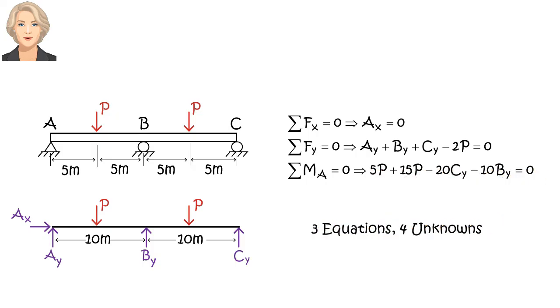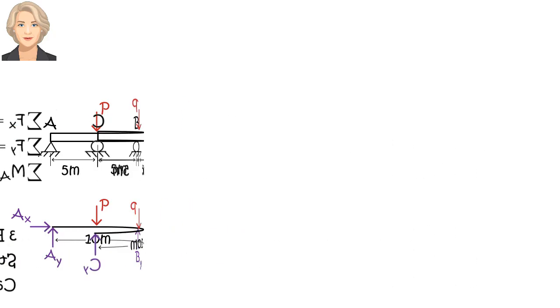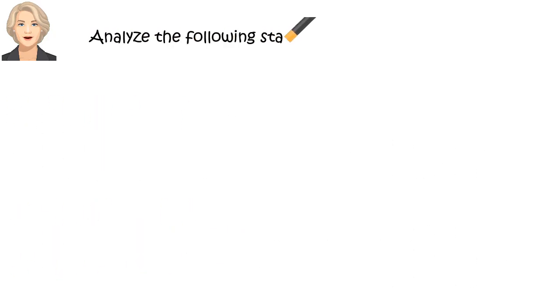Therefore, we cannot calculate the unknowns. The beam is not statically determinate. This is called a statically indeterminate beam. We will discuss techniques for analyzing statically indeterminate beams in later lectures. For now, see if you can analyze the following determinate beams.